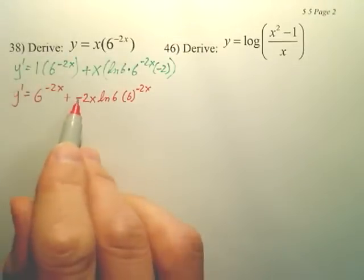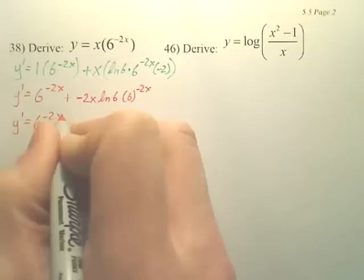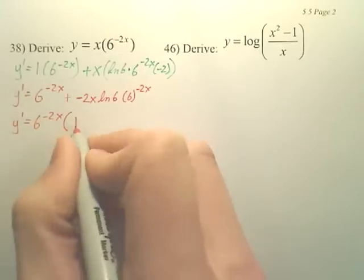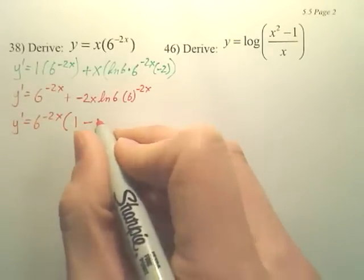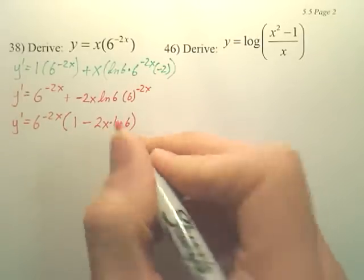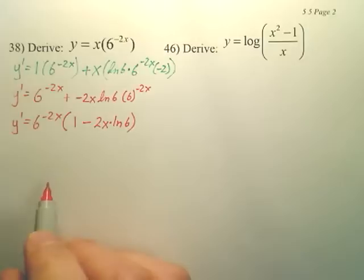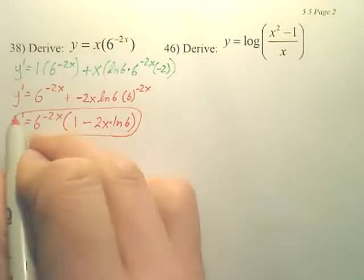Plus negative, that's kind of, okay. So it's going to look something like this. 6 negative 2x, pull that out, 1 minus 2x ln 6. That's what I would probably see it as. That would be my simplified form.